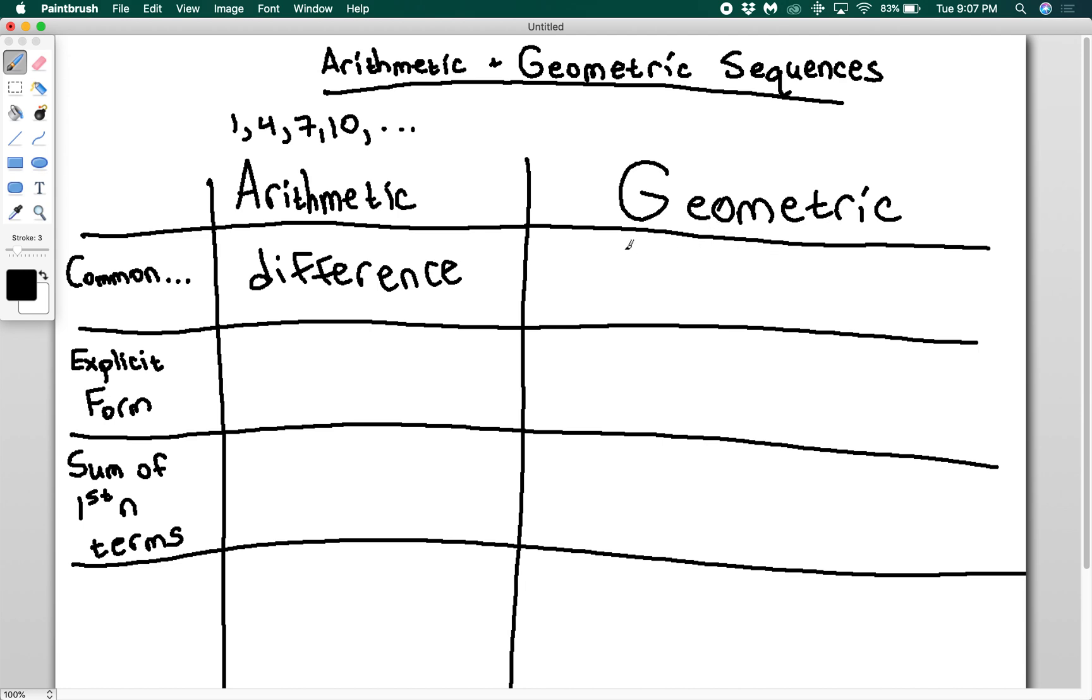A geometric series on the other hand has a common ratio where if I divide any term by its preceding term that's going to be the same.